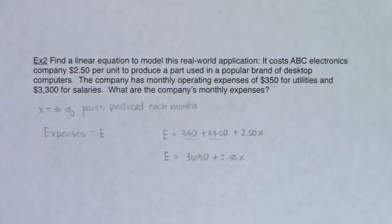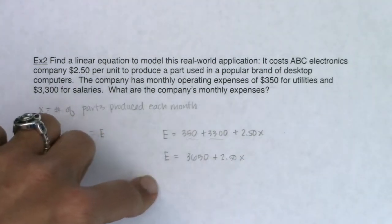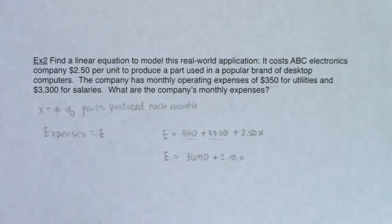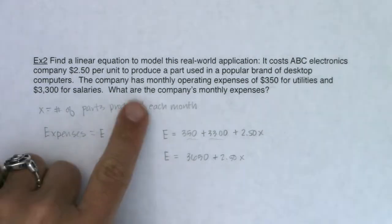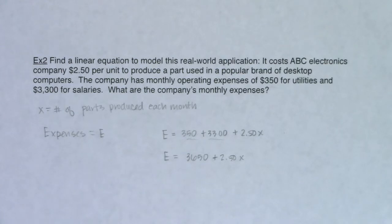This problem didn't extend and say, for example, what are the company's monthly expenses if they produce 7,500 parts? They didn't have us plug in a value for x and get a value for E, or give us a monthly expense and ask how many parts were produced. We'll run into that type of word problem later on, but for right now it's just asking us to stop here — we have our linear model. Heading over to example three, where we'll review distance equals rate times time problems.